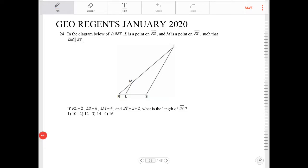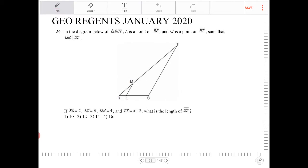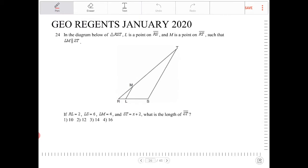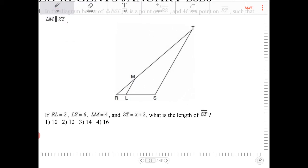In the diagram below, triangle RST, L is a point on RS, and M is a point on RT such that LM is parallel to ST. So I want to indicate that here. So these are parallel.